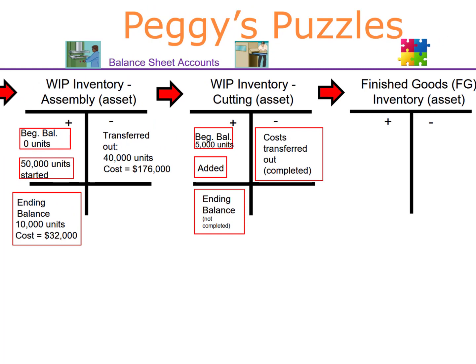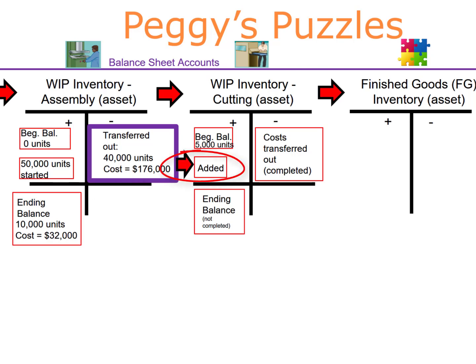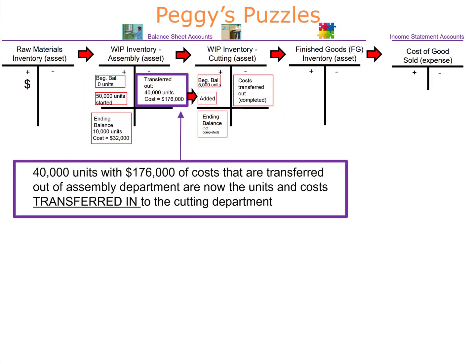The 40,000 units with $176,000 of costs that were transferred out of the assembly department — since the cutting department is the next process, those same 40,000 units with $176,000 of attached costs are transferred in to the cutting department. So the cutting department has 40,000 units transferred in, and the $176,000 of costs are also transferred in.